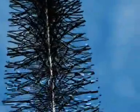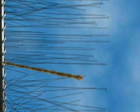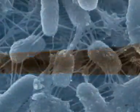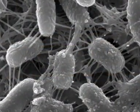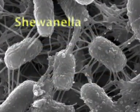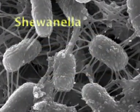The brush anode is made of carbon fibers bound by metallic wires. It has a large surface area for growth of an electrogenic biofilm, and high conductivity at the core to collect the produced current.